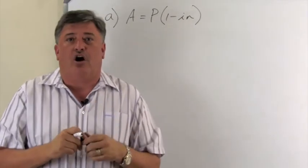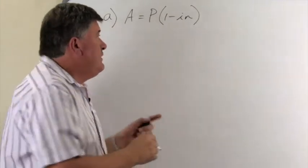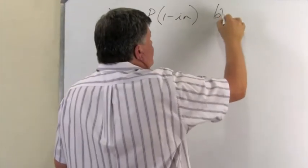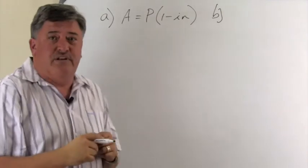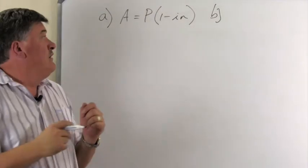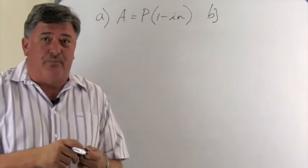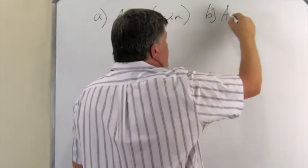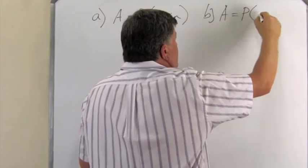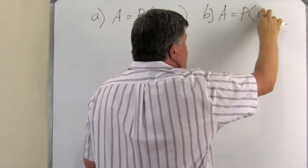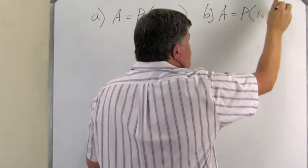The B part of this problem that we will discuss is the compound depreciation, and you remember from compound interest, this one, the depreciation, A equal to P, one plus, that was for compound interest, and now one minus I to the N.